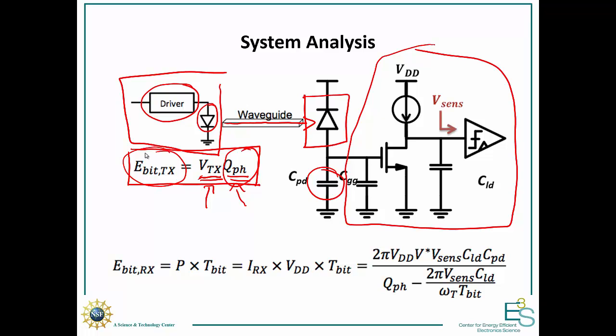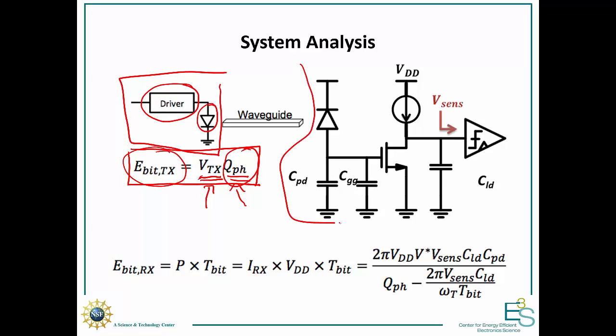Now, on the receiver side, well, we want to take into account the energy of this entire receiving system. So, mostly, it's going to be the energy consumed by the first stage of the amplification right here. And so the energy per bit is going to be, this is obvious, the power times the bit time.